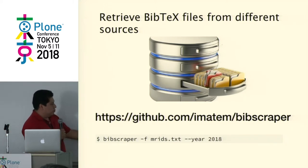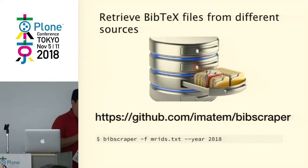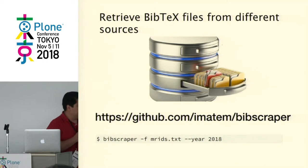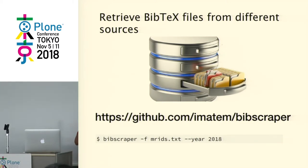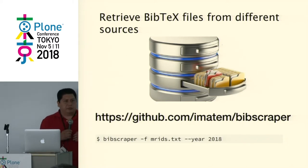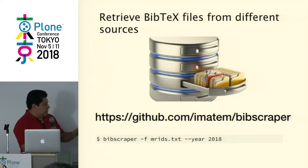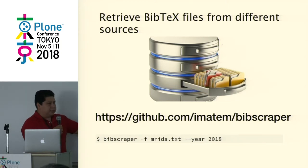The problem is that we also implemented this as an Archetype back then. Since then we have been working on more things related to bibliographies, like retrieving BibTeX files from different sources. We developed a small script called BibScraper — the idea being a previous scraper that used MathSciNet to download BibTeX files. We developed this Python script where you can provide the ID of the person whose publications you need, or a list of IDs and a year range. This is done only for MathSciNet because that is where every person has an ID.